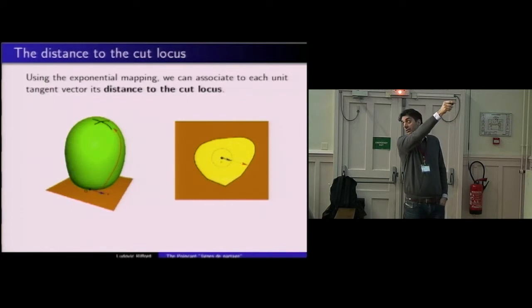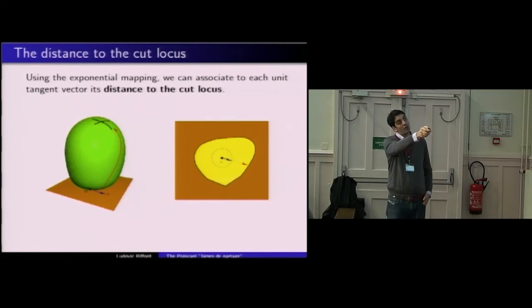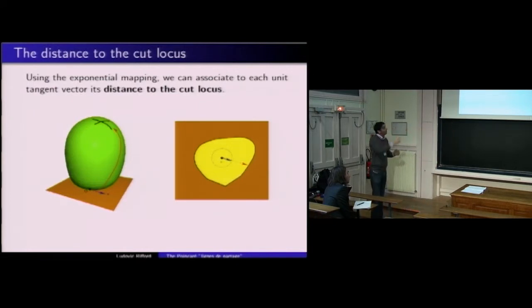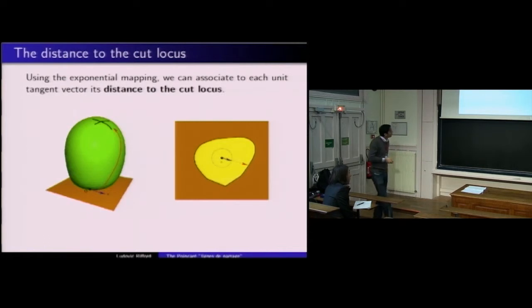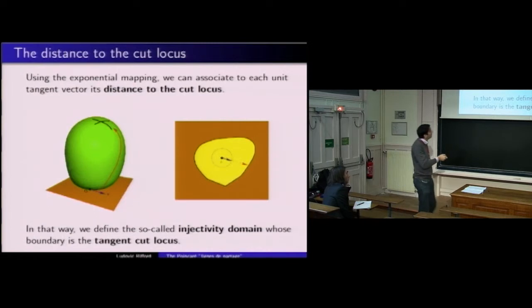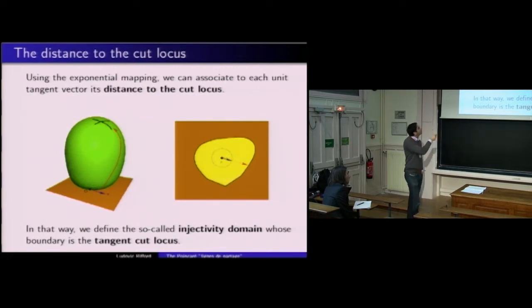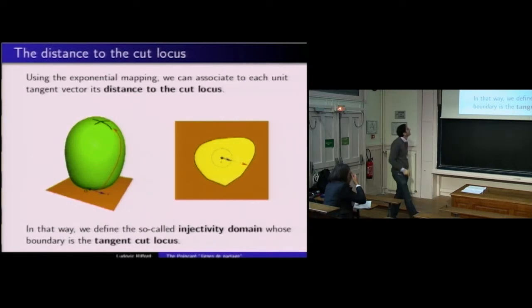L'image par l'application exponentielle envoie le bord de l'ensemble noir (dans l'espace tangent) sur le cut locus. L'ensemble jaune est ce qu'on appelle le domaine d'injectivité, et l'ensemble noir est le cut locus tangent — le cut locus visualisé dans l'espace tangent. C'est une représentation utile car elle permet de parler de régularité du cut : est-ce que ce graphe en coordonnées polaires a une certaine régularité ? Comme le dit Poincaré, on peut définir un système de coordonnées polaires, et l'application exponentielle envoie l'ensemble jaune sur le complémentaire du cut.